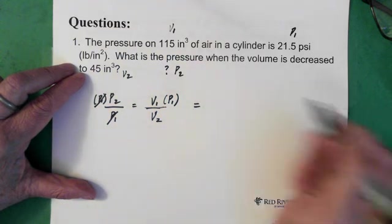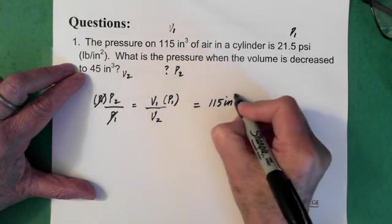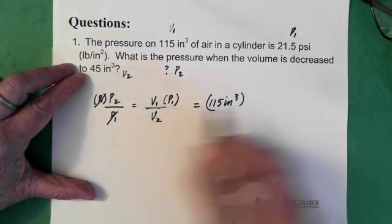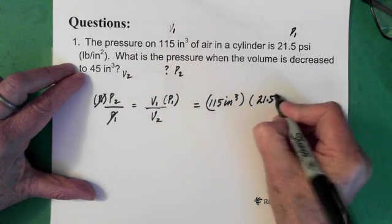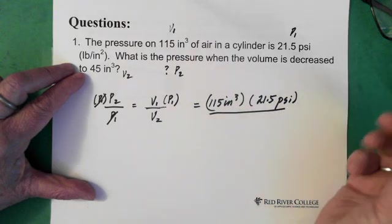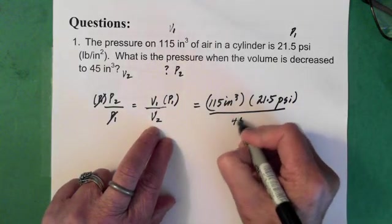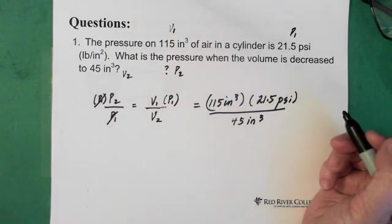So pressure 2 then equals volume 1 times pressure 1 divided by volume 2. So volume 1 is 115 inches cubed. And pressure 1 is 21.5 psi. And we're going to divide it by volume 2 which is 45 inches cubed.